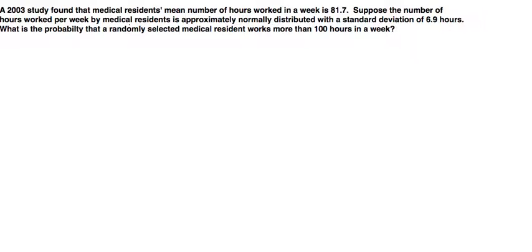We're going to start by first writing down what it is that we already know and what it is that we're trying to figure out. So the problem states that we have a mean that's equal to 81.7. We'll write that down.